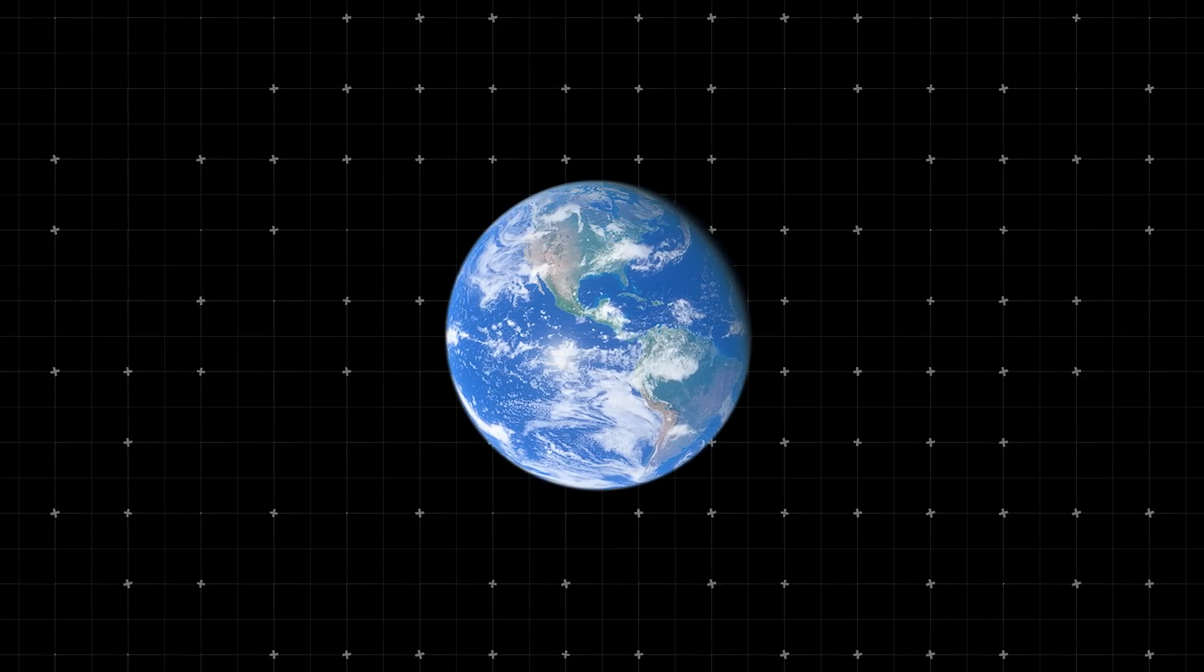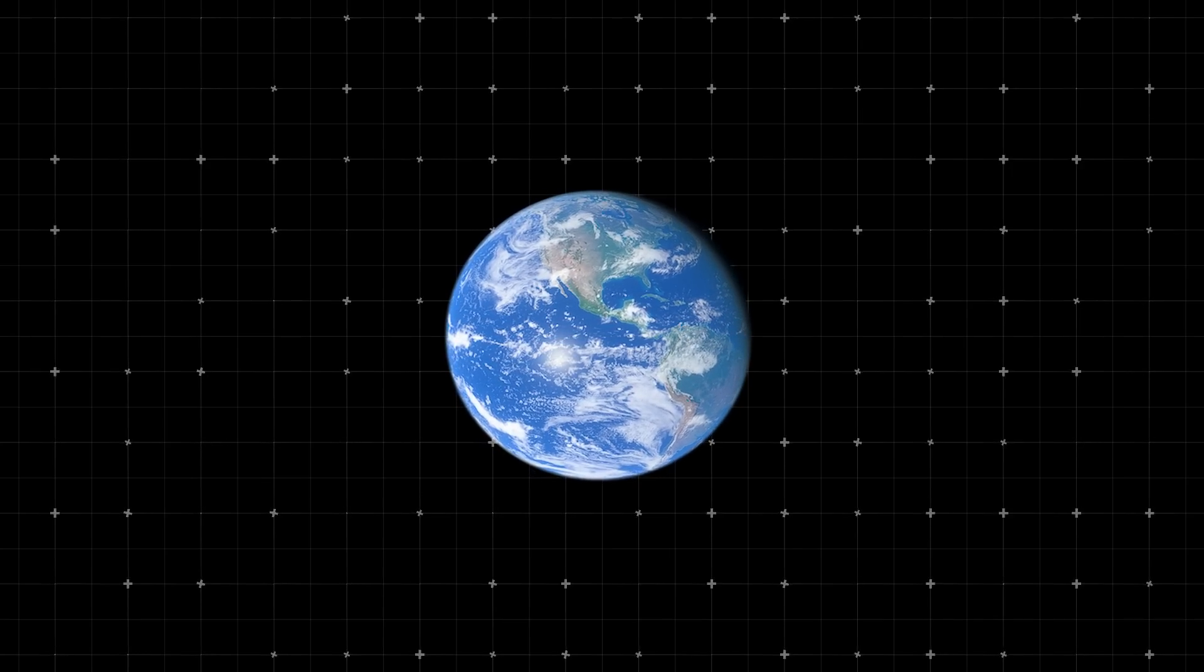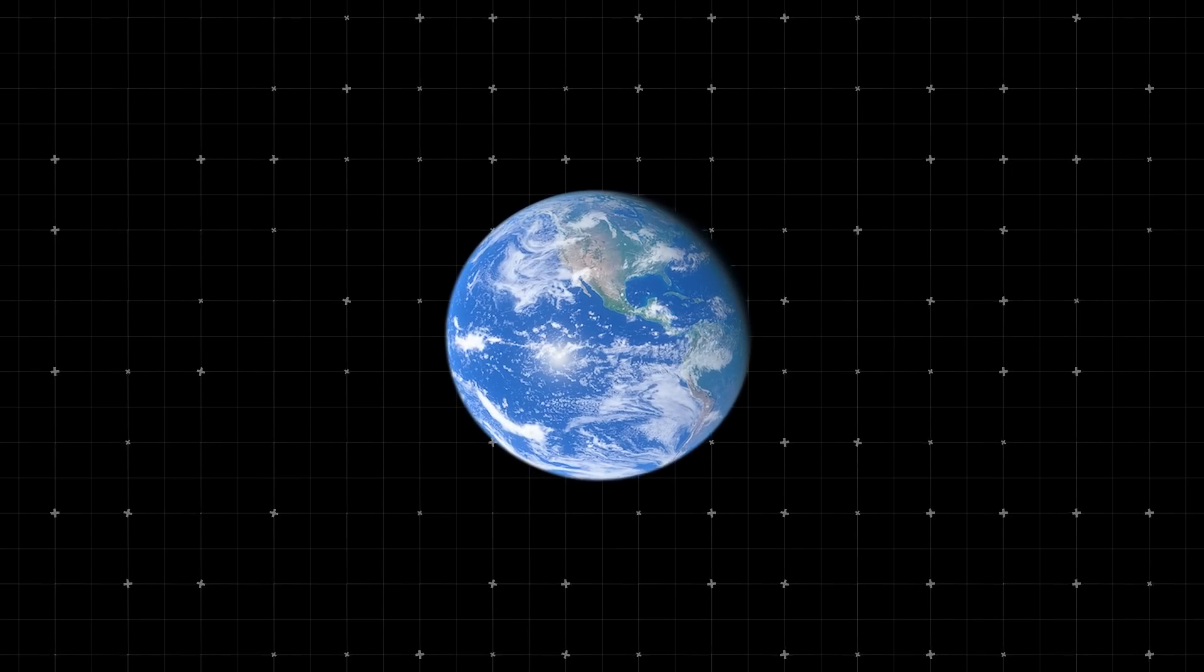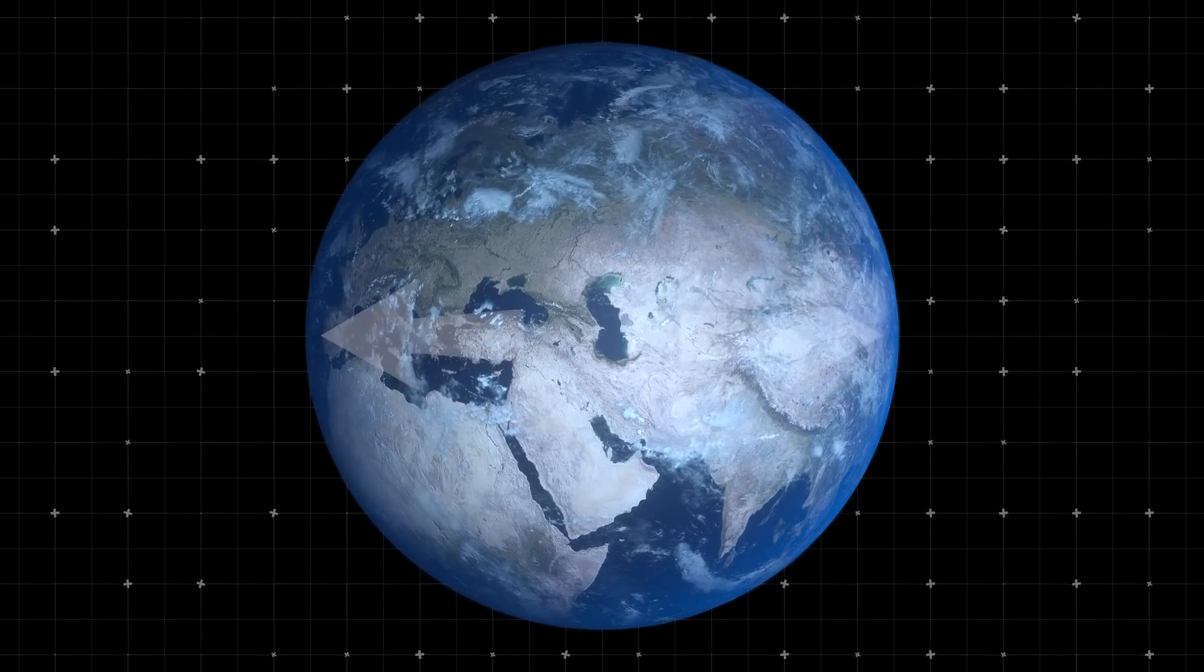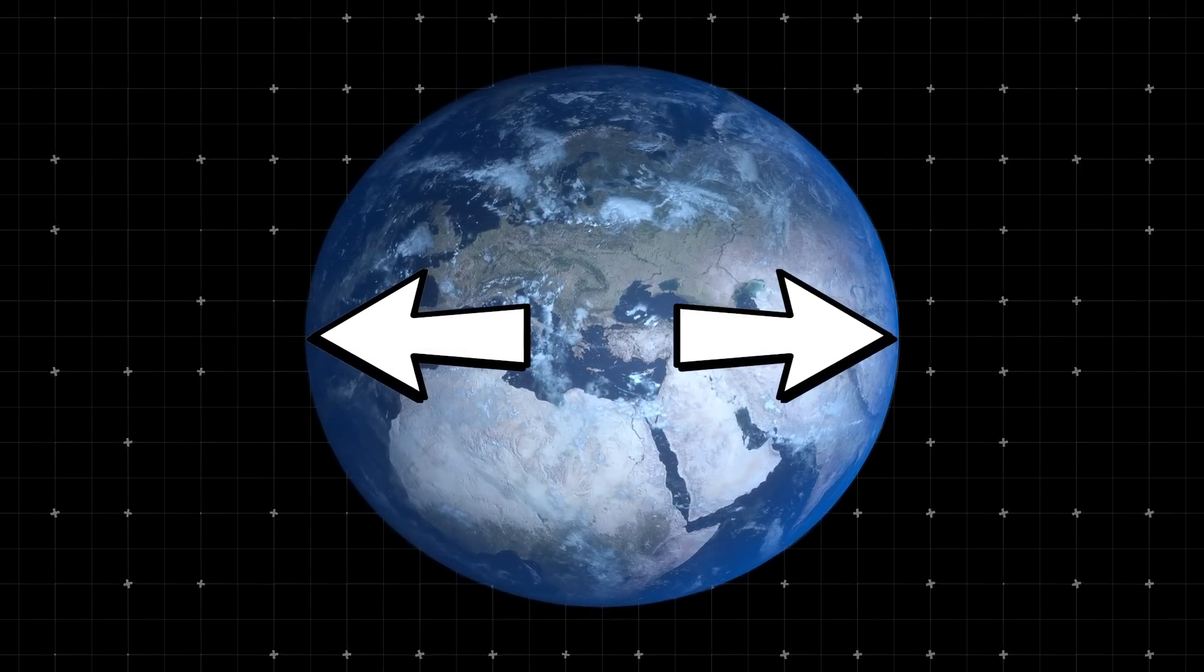Back to Earth, our planet isn't a perfect sphere. It's slightly squashed at the poles because it spins. This flattening happens because as Earth rotates, centrifugal force pushes outwards at the equator.